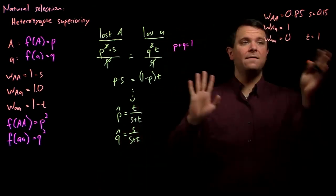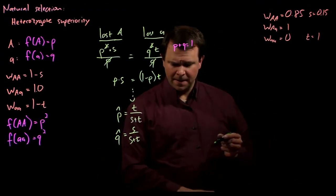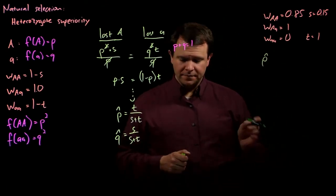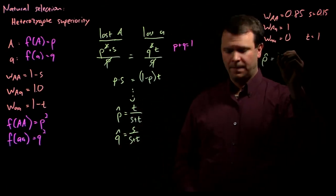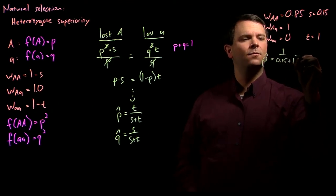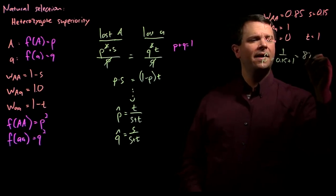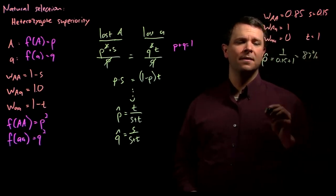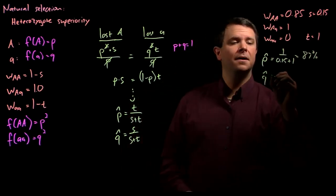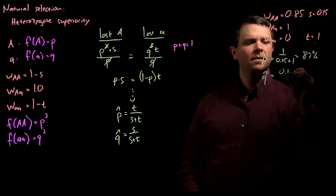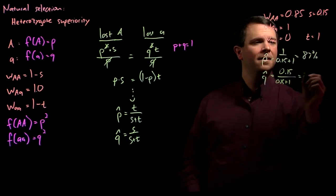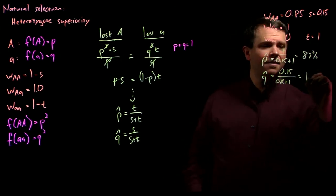And so, if you run the math using these equations, you find that the predicted allele frequency for the dominant allele is 1 over 0.15 plus 1, about 87%, whereas the predicted recessive allele frequency at equilibrium is 0.15 over 0.15 plus 1, about 13%.